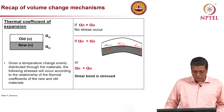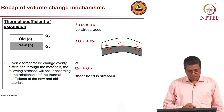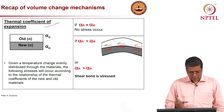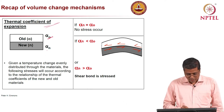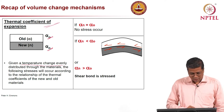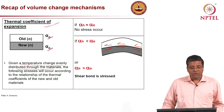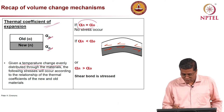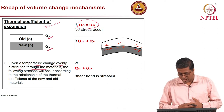This is a recap of volume change mechanisms. I will show you 4 major material parameters which really influence volume change. One we discussed was the thermal coefficient of expansion. If alpha is the coefficient of thermal expansion, 'O' here indicates old material or existing concrete or substrate, and 'N' indicates the repair material. Given a temperature change evenly distributed through the material, the following stresses will occur according to the relationship of the thermal coefficients. If alpha of the new material equals alpha of the old material, then there will be no shear stress between the layers of the two materials.